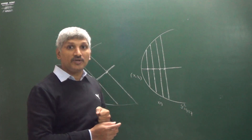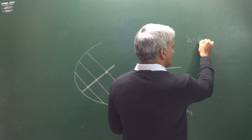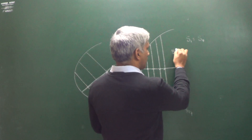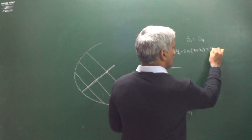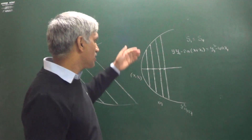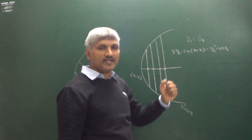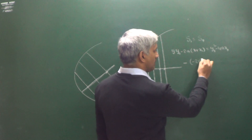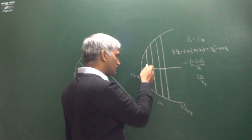If (x1, y1) is the middle point of the chord, then the equation of the chord is S1 = S11, which gives: y·y1 − 2a(x + x1) = y1² − 4ax1. That is the equation of the chord whose middle point is (x1, y1). The slope of this line is equal to minus the x-coefficient divided by the y-coefficient, which is 2a / y1.